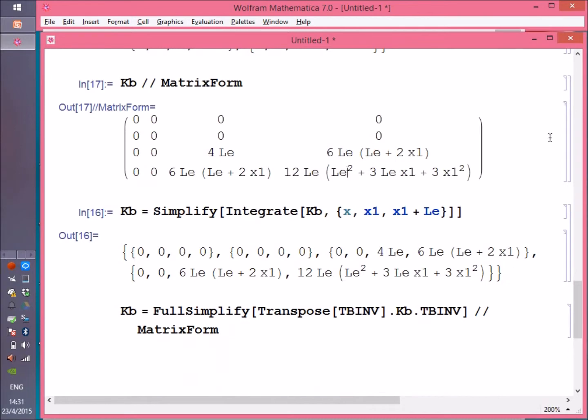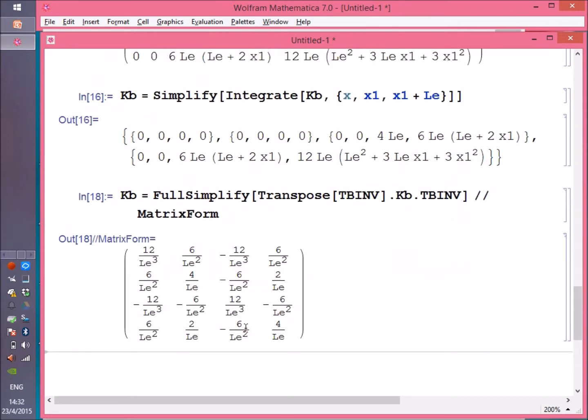So now this is what we got from the integration, and now I'm going to multiply it from both sides by the inverse of the transformation matrix, and this is what you're going to get. Remember, I haven't multiplied the matrix by EI, which is the flexural stiffness.